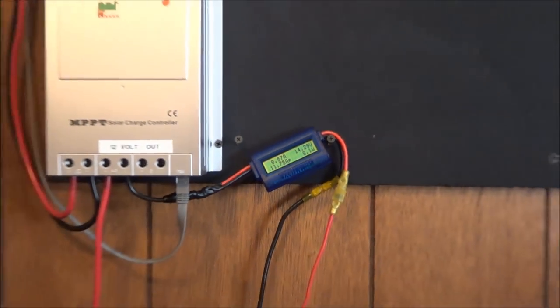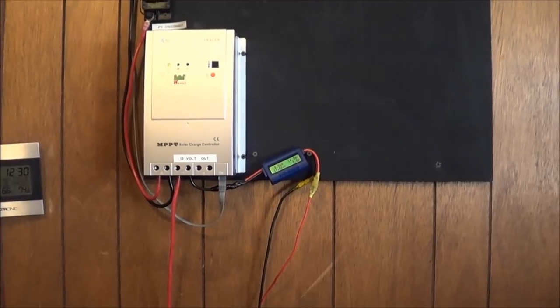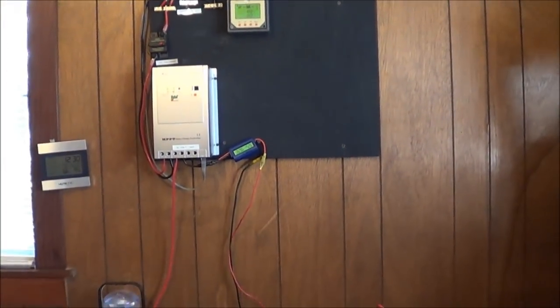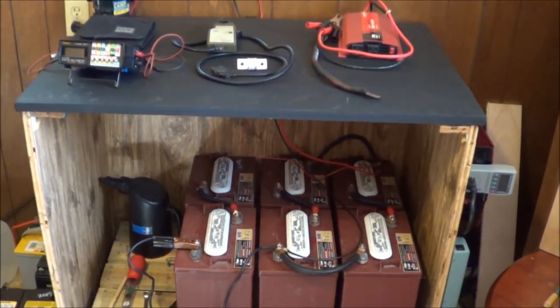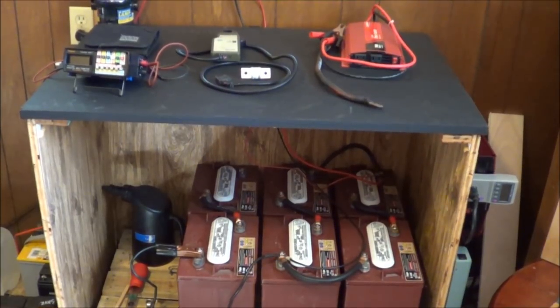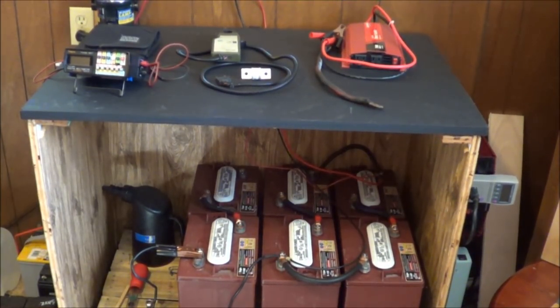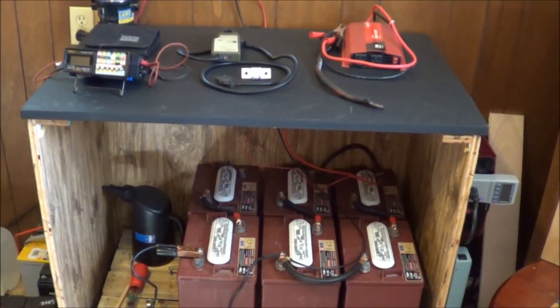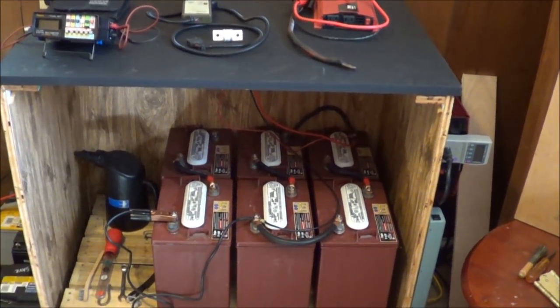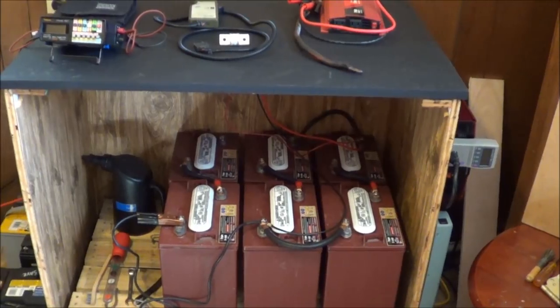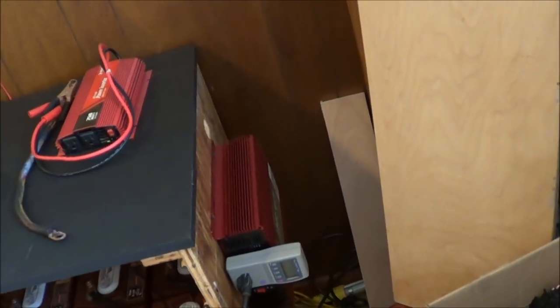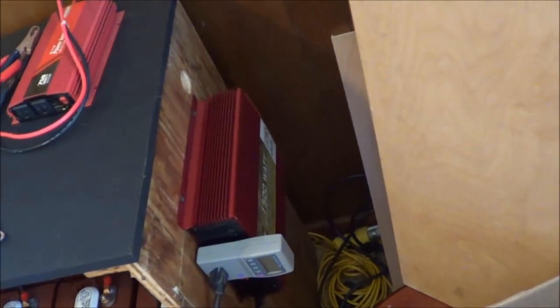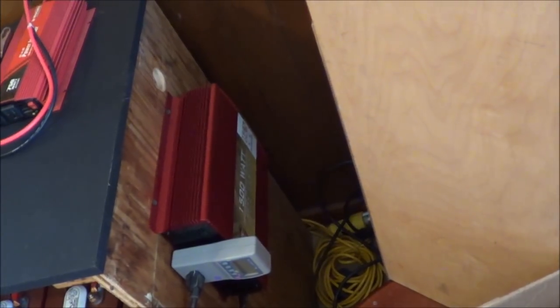What I wanted to show you is there's six T105 6-volt Trojan batteries. They're wired for 12-volt. Series parallel 6-volt batteries, but it's 12-volt going out to the inverter. On this side I have the 1500-watt Tiger Claw. Right now I'm on a tripod fumbling around.